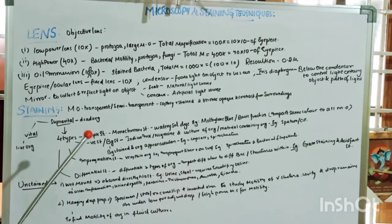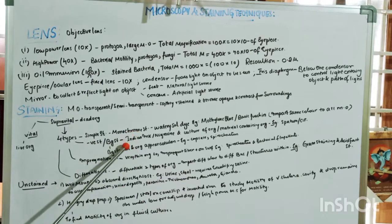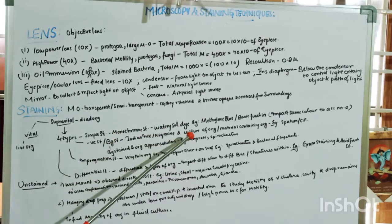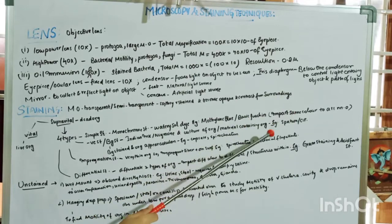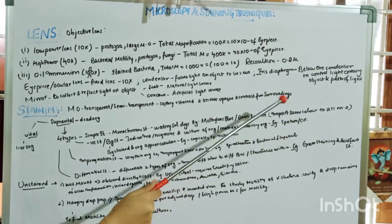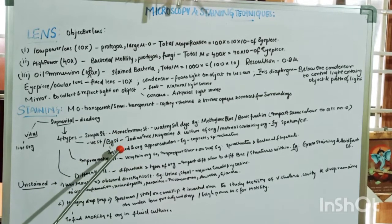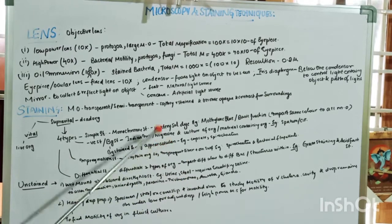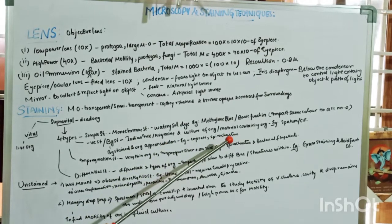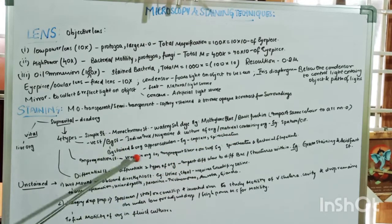Negative staining or background staining uses Indian ink or nigrosin, which is added to the culture of the organism or material containing the organism, such as sputum and CSF. In background staining, the background is stained and the organism appears colorless. Examples include capsule and spirochetes — similar to dark field microscopy where the organism appears self-luminous.